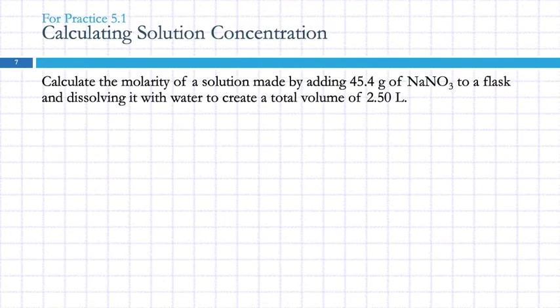Let's calculate the molarity of a solution made by adding 45.4 grams of sodium nitrate to a flask and dissolving it with water to create a total volume of 2.50 liters. So let's analyze what they're giving us. The numbers are generally important. 45.4 grams of sodium nitrate and 2.50 liters. And what are they asking us to find? Molarity. So there's no question word here, but there's a command. Calculate. So it's always a good idea, and if you don't have colored highlighters, just underline them or circle them, but identify what's given to you in the problem and what you're trying to find.